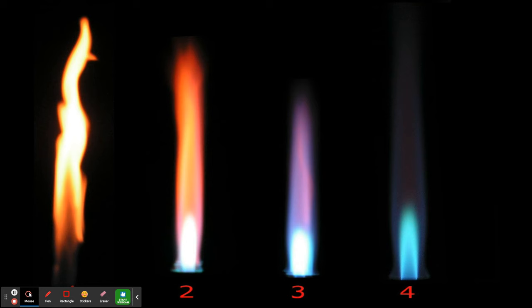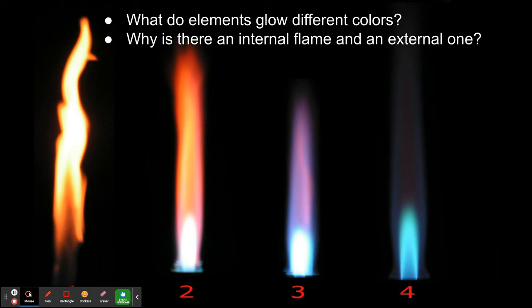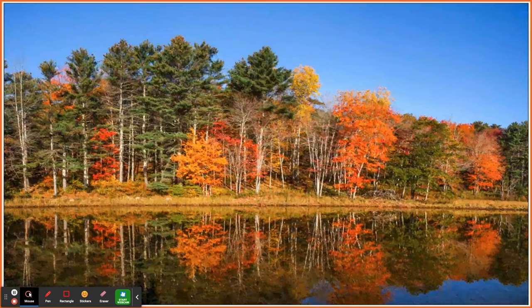Let's say you do a flame test in a chemistry classroom and you notice that the elements glow differently. The phenomenon is that some glow purplish, others are reddish, some are blue. But also you might notice that there are two flames — an internal flame and an external flame. That's a phenomenon as well. Why is there an internal flame and an external flame?